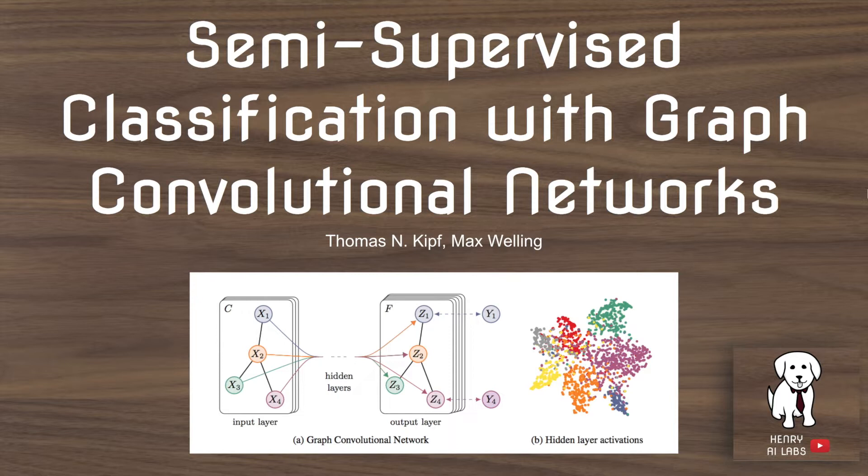This video will explain graph convolutional neural networks. The idea of the graph convolutional network, or GCN, is to take graph data, which is G equals VE, where V is a set of vertices and E is a set of edges, and to classify the vertices according to some node label.